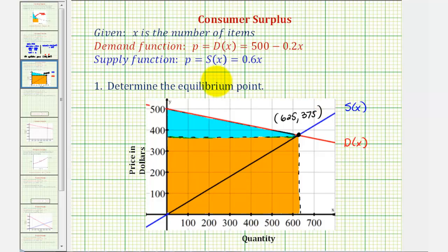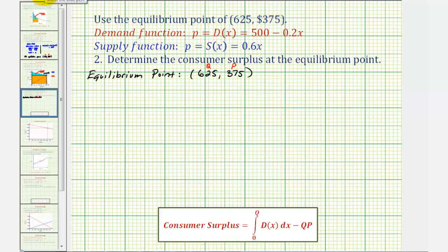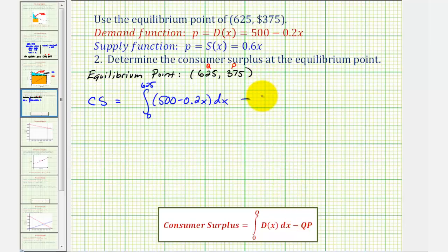So to find the consumer surplus, we're going to find the area of this region here. So the consumer surplus is going to be equal to the integral of the demand function, which is 500 minus 0.2x from 0 to 625 minus Q times P which is 625 times 375.